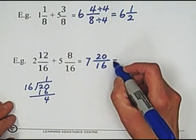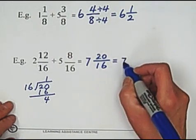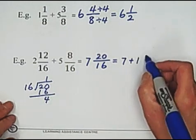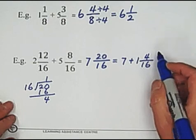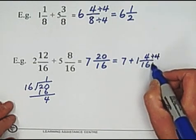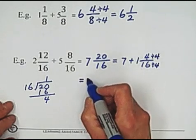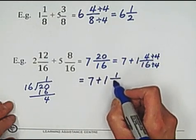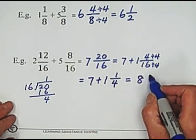And then, 1 16 in 20. We got 4 remainder. So we can write this mixed number in two parts. 7 plus 20 over 16 equals 1 and 4 over 16.